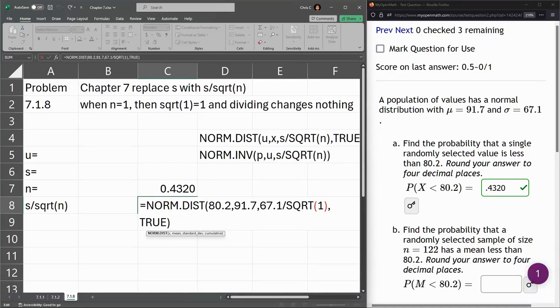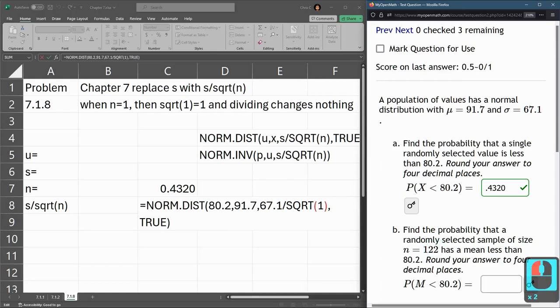What's different, we have a population size 122. Or a sample size 122, which is N. So this one becomes 122.